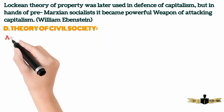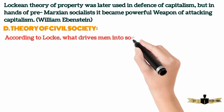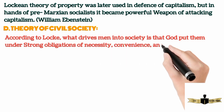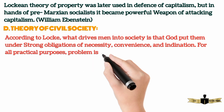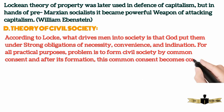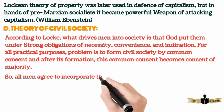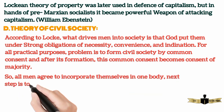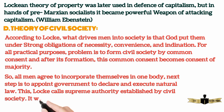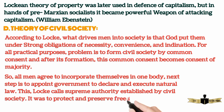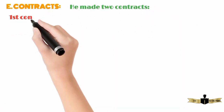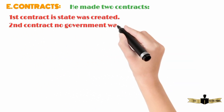D. Theory of civil society. According to Locke, what drives men into society is that God put them under strong obligations of necessity, convenience, and inclination. For all practical purposes, the problem is to form civil society by common consent, and after its formation, this common consent becomes the consent of the majority. All men agree to incorporate themselves into one body; the next step is to appoint a government to declare and execute natural law. Thus, Locke calls this supreme authority established by civil society, which was to protect and preserve freedom. He made two contracts: the first contract created a state, and the second contract created a government.